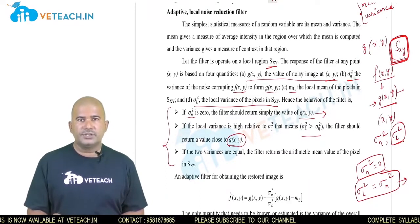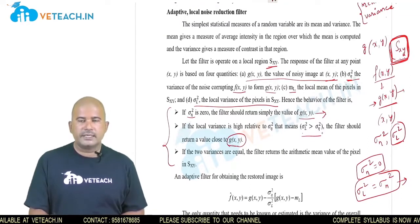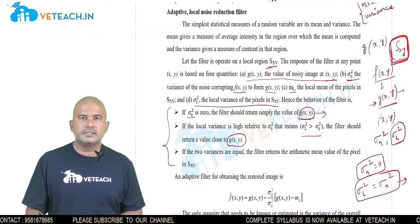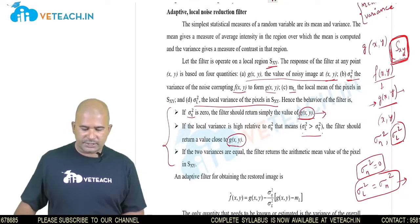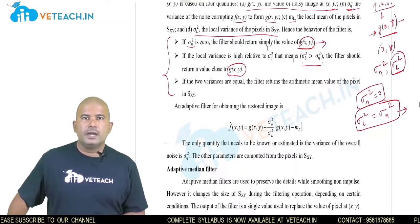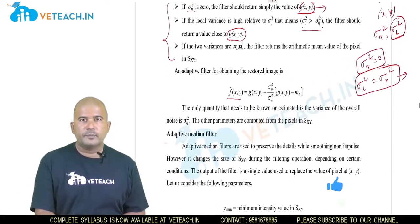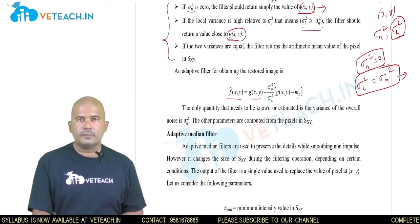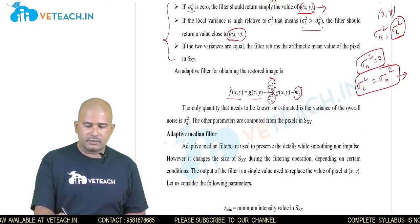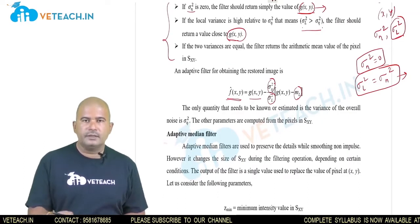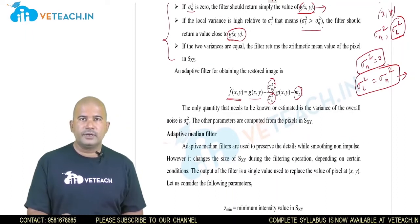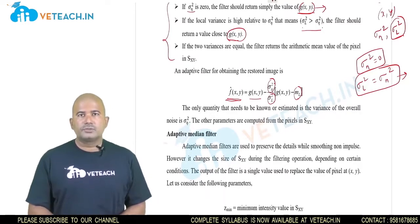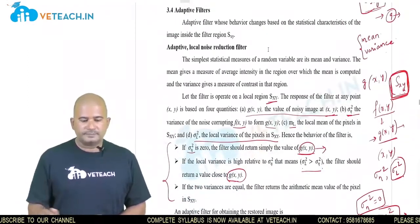To summarize the conditions: if sigma_n squared is 0, the output is g(x,y); if local variance is greater than noise variance, a value close to g(x,y) is returned; if both variances are equal, the arithmetic mean is the output. Based on these conditions, the estimated or restored image f-hat is given as: g(x,y) minus (sigma_n squared / sigma_l squared) times (g(x,y) minus the local mean). This is the basic procedure involved in designing an adaptive filter.